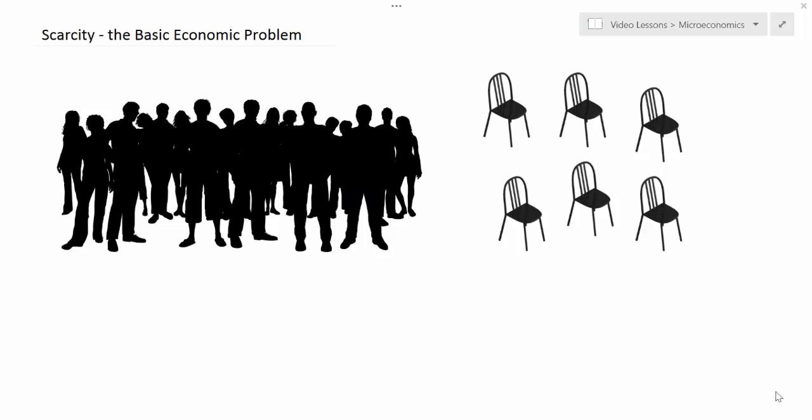What would you do if you showed up to your first day of a new class and found that there were 16 classmates joining you but only six chairs in the room? Your teacher tells you that unfortunately we're going to have to live with the six chairs we have, because the other ten chairs have been taken by the school for some other use. So he tells you: you've got to work it out — it's up to you to decide who gets the chairs and how often.